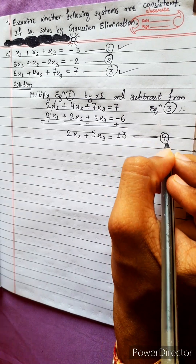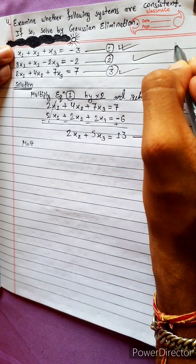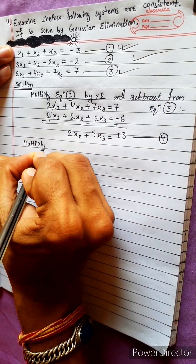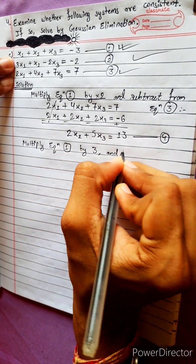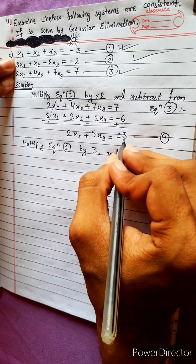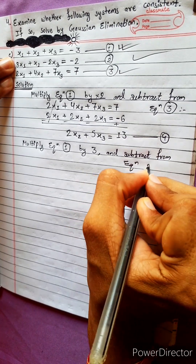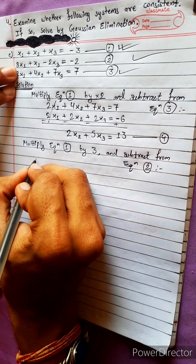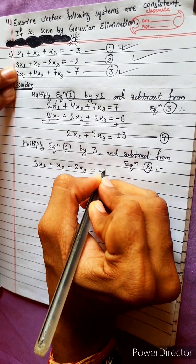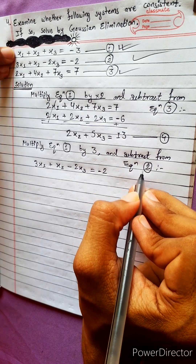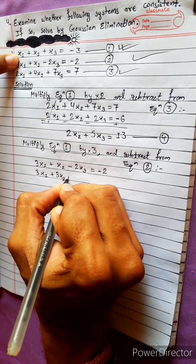Now solving equations 1 and 2 again: multiply equation 1 by 3 and subtract from equation 2. Equation 2 is: 3x1 plus x2 minus 2x3 equals minus 2. Equation 1 multiplied by 3 is: 3x1 plus 3x2 plus 3x3 equals 9.